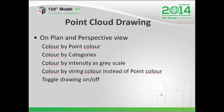For drawing of the point cloud on a plan and perspective view, you can colour by point colour, colour by categories, or colour by intensity as in grey scale. You can also colour by the string colour instead of point colour, and you can toggle it off and on to manage it more successfully.